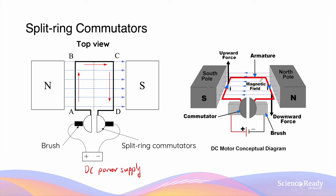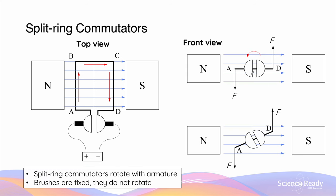If you look at the front view of this DC motor diagram, this is what you will expect to see. When the plane of the armature is horizontal, the two semi-circular commutators are also horizontal.